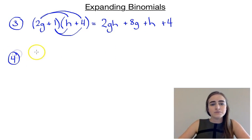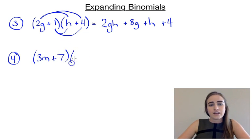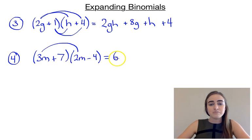Our last example is 3m plus 7 and 2m minus 4. So we'll expand it out. We've got 3m times 2m, which would give us the 3 times 2 is 6. And m times m is m squared.